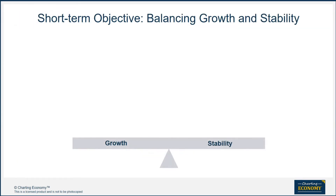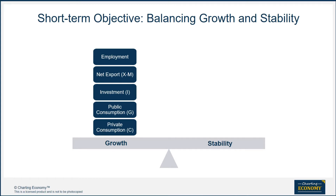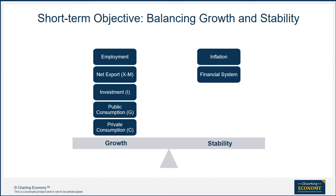The short-term objective of economic policy makers is to balance growth and stability. They can stimulate growth through four engines on the expenditure side: private consumption, public consumption, investment, and net export. Increasing employment is usually the immediate target for short-term growth stimulus policies. On the other side, policy makers have to watch out for inflation and other macroeconomic stability issues, such as the financial system's health, fiscal health, balance of payment, and the exchange rate.